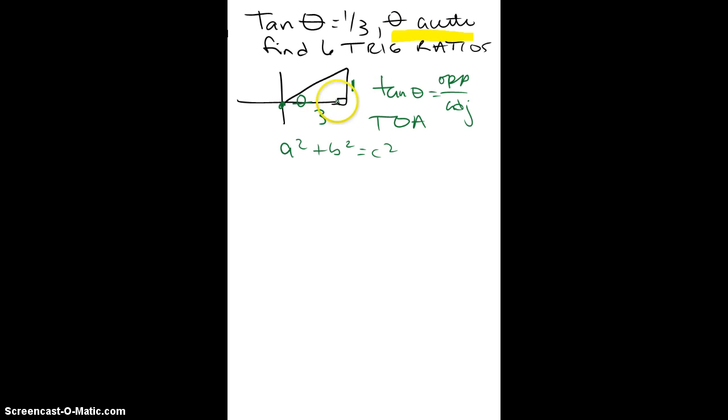and that would be the Pythagorean theorem. This time we know both a and b, so we have 1 squared plus 3 squared equals c squared. Add those together, that's 1 plus 9, so we get 10.